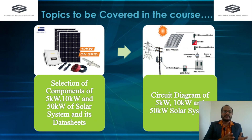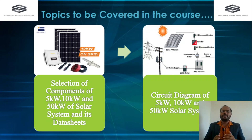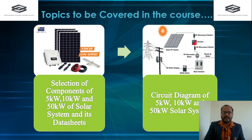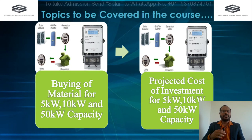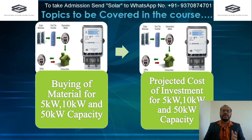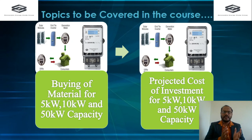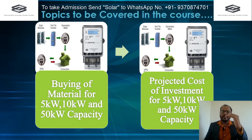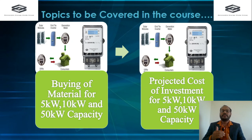We're also going to talk about the selection of components for the 5 kilowatt off-grid and the 10 and 50 kilowatt on-grid solar systems — what components are required, how to make a component list, and how to prepare data sheets. We'll cover circuit diagrams for 5, 10, and 50 kilowatt systems, prepare a bill of materials, project estimated costs, and discuss how to prepare supply block, service block, and maintenance block components.